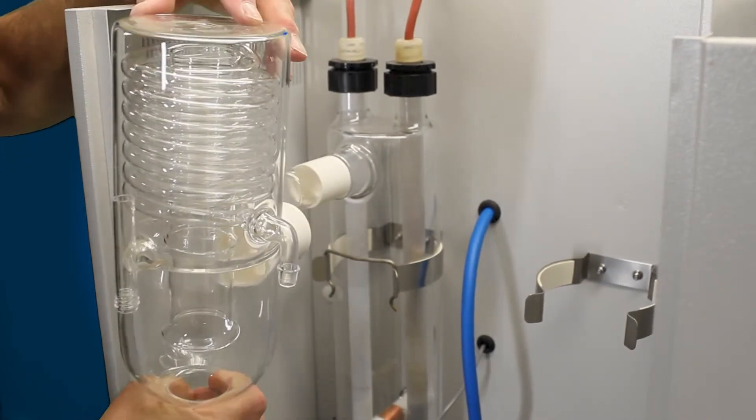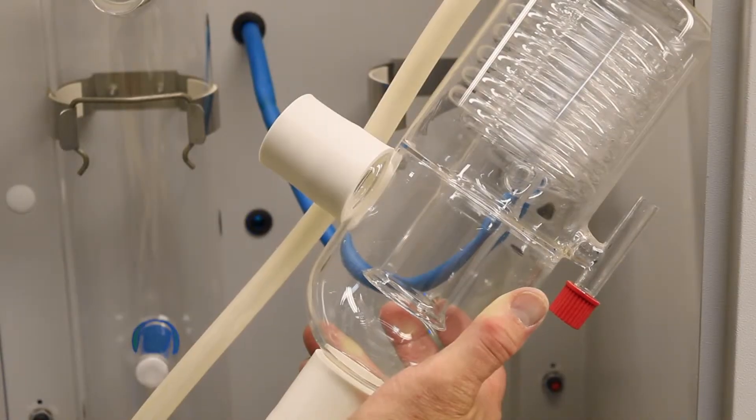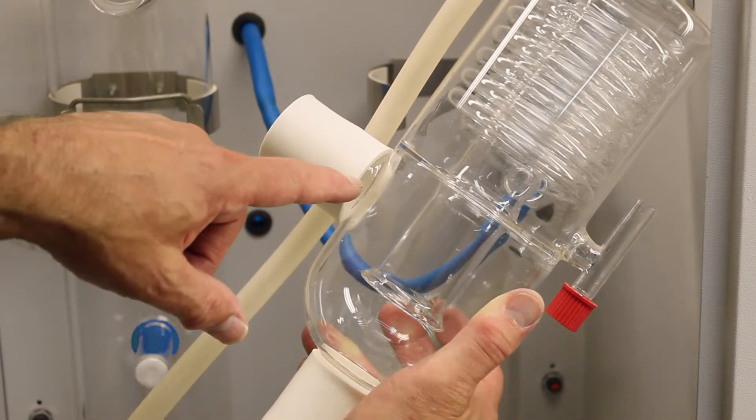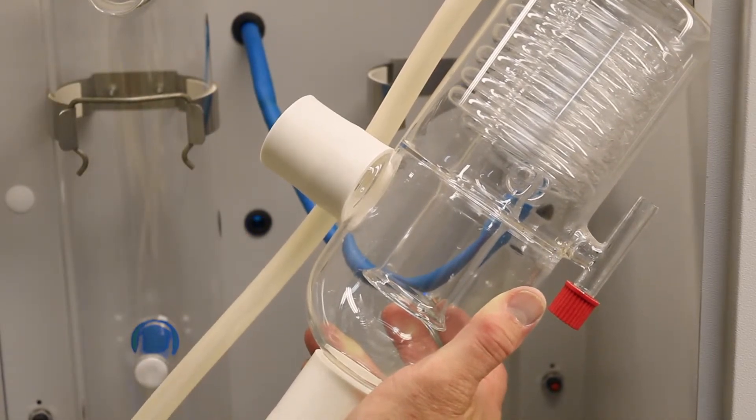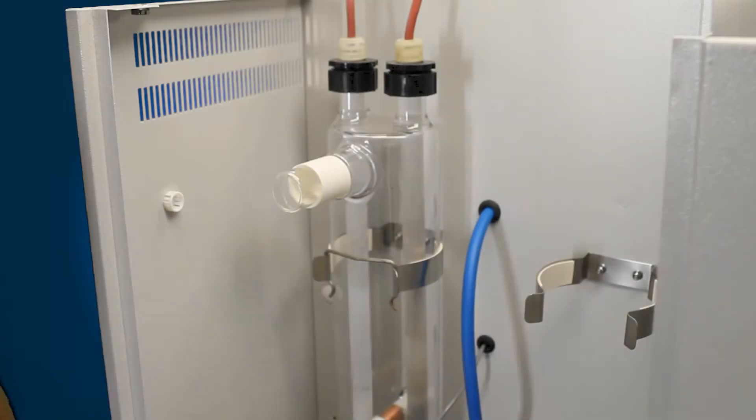Simply pull out on the condenser. The sleeve comes with it. You're going to remove the old sleeve. Again, if you can't get the sleeve to come off that way, you're going to have to cut it lengthways. Got your old condenser. Set that aside.